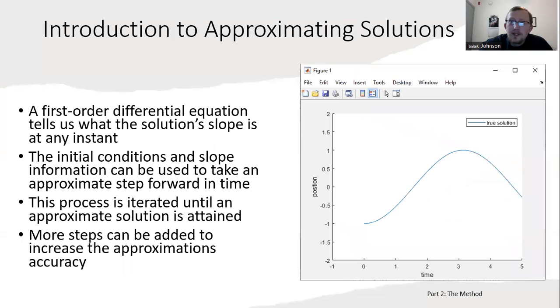A first order differential equation tells us what the slope is of the true solution at any point in time. The initial conditions and the slope information can be used to take an approximate step forward in time. The way I like to describe this is if you were walking down a path blindfolded, but you had a friend who could tell you which way to turn. But your friend can't feed you continuous information, so you take a step and ask which way to turn, and you kind of end up with an approximate shape of the path you're attempting to walk on.